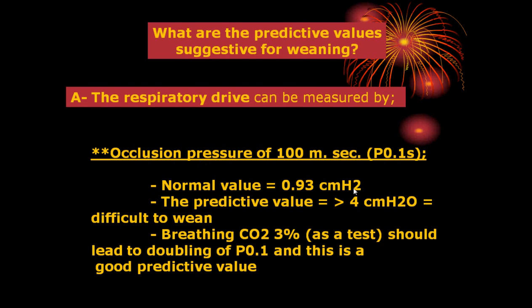We test the respiratory center by checking respiratory drive — how much firing of impulses comes from the respiratory center to stimulate the respiratory pump to deliver tidal volume. This is measured as the pressure exerted within the first 100 milliseconds, called P0.1 (P100ms). Normally, respiratory drive at rest generates about 1 cmH2O; maximum is about 4–6 cmH2O. If at rest the P0.1 is already 3–4 cmH2O, there is no reserve capacity and you cannot wean the patient.